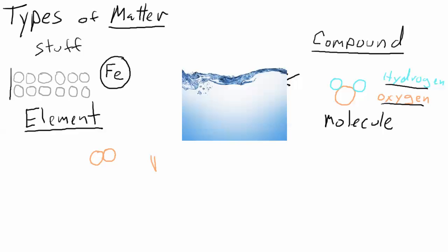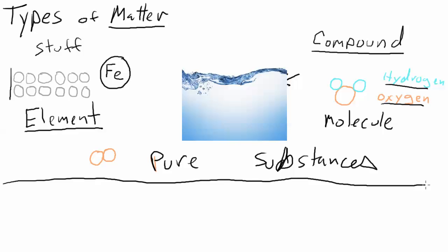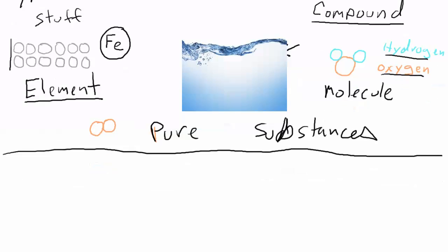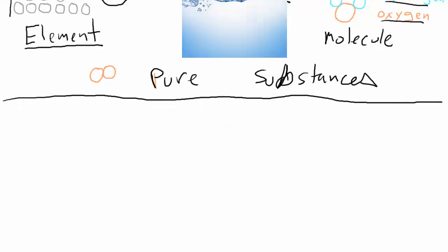Elements and compounds are pretty simple in terms of types of matter, and they're also collectively referred to as pure substances. But there are two more different types of matter that we're going to talk about for this class, and we're going to talk about them collectively - they're called mixtures.